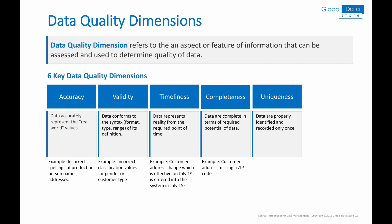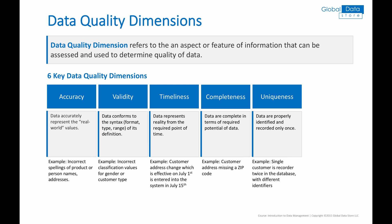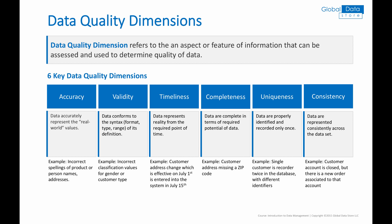Uniqueness: data are properly identified and recorded only once. A typical example is a single customer recorded twice in the database with different identifiers. Consistency: data are represented consistently across the dataset. A typical example is a customer account that is closed but there is a new order associated to that account.